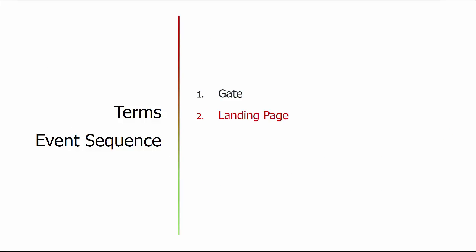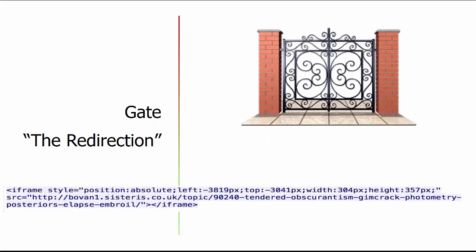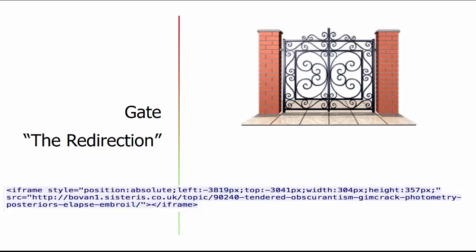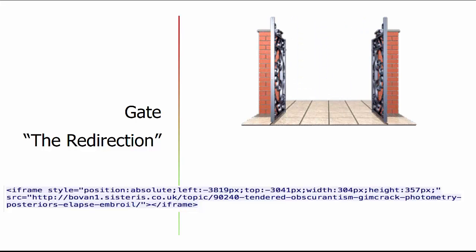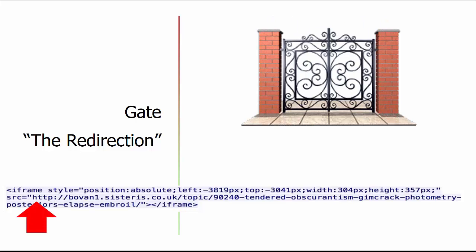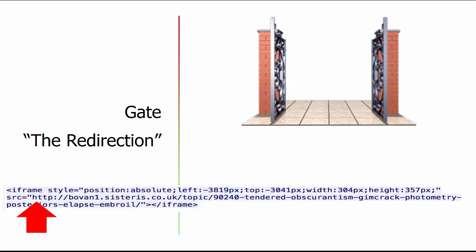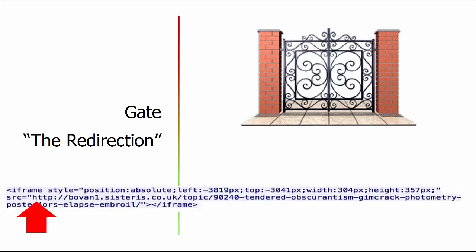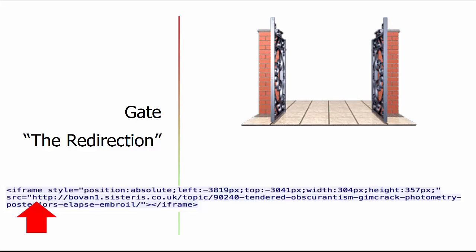In order to understand this process, we need to go through some terms: gate, landing page, exploit kit, payloads. The gate is your redirection — this is happening behind the scenes, maybe way down in the corner or transparently on an iframe. In this particular example, it is an iframe handling the redirect, and you can see it's pointing to a known malicious URL.